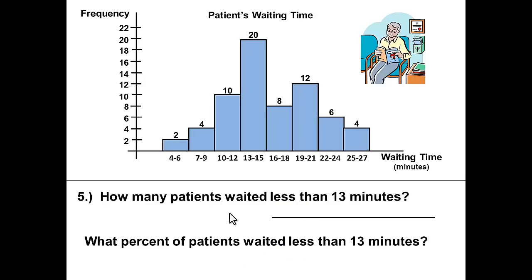Let's look at question five. How many patients waited less than 13 minutes? We can include 13 to 15 because 13 is not less than 13, so it will be the first three groups of patients all waited less than 13 minutes. That will be 2 plus 4 plus 10. That will give us 16.